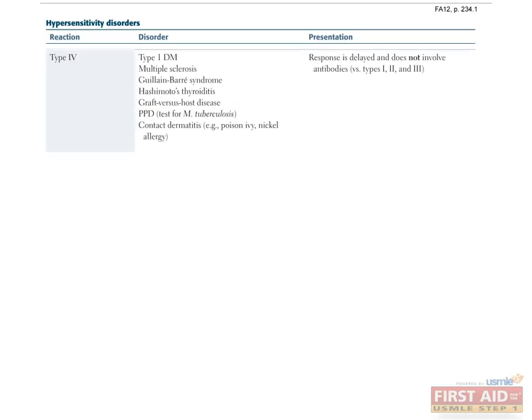Questions involving type 4 reactions are usually given away by the chronology of symptoms. Type 4 reactions are delayed, meaning the patient doesn't begin to experience symptoms until sometime after the initial insult. Two of the most important examples on the boards are the PPD skin test for tuberculosis, which requires waiting a few days before the test can be read, and a reaction to poison ivy — which might be confusing, since other plant reactions like peanut allergies or hay fever are type 1.